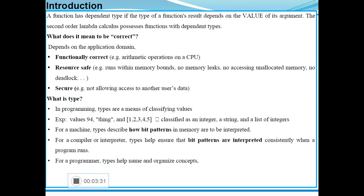Second case is resource safe correctness. For example, the system is running within memory bounds. No memory leakage happens, no accessing of unallocated memory, no deadlock conditions happen. Third case is dependent types in terms of security, which does not allow access to another user's data.